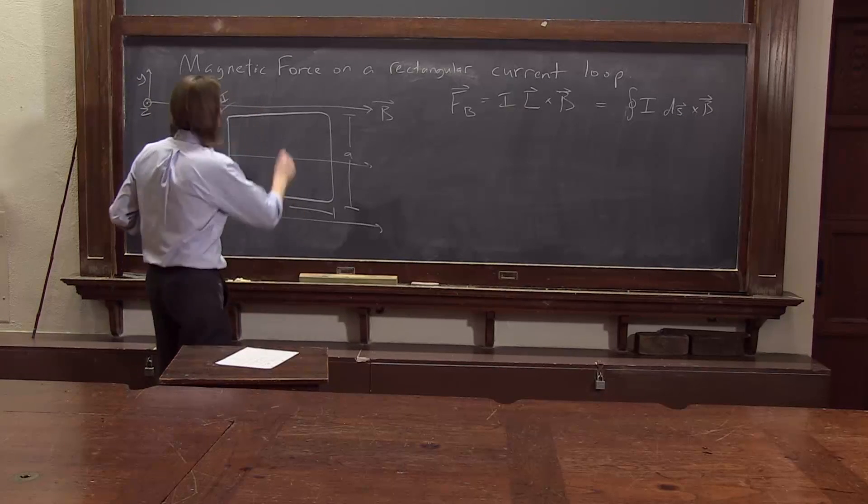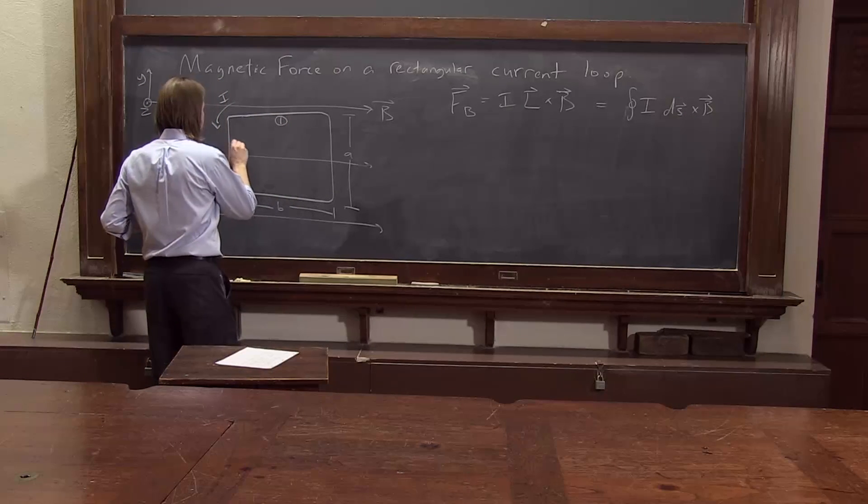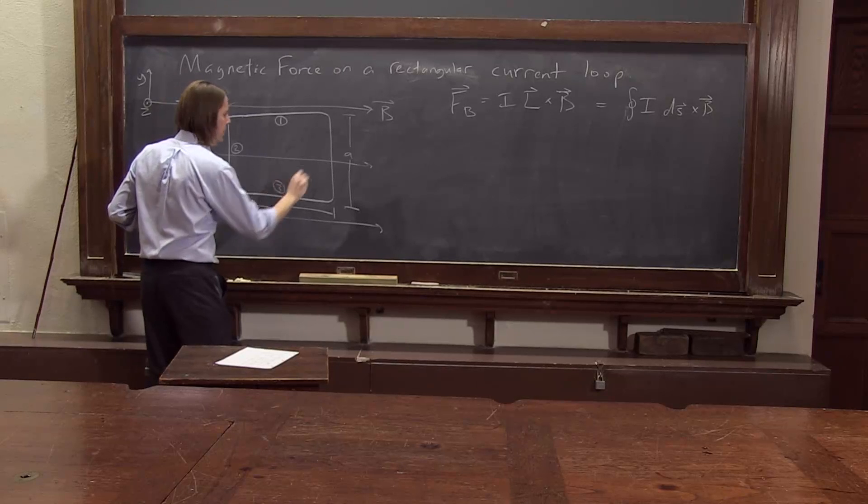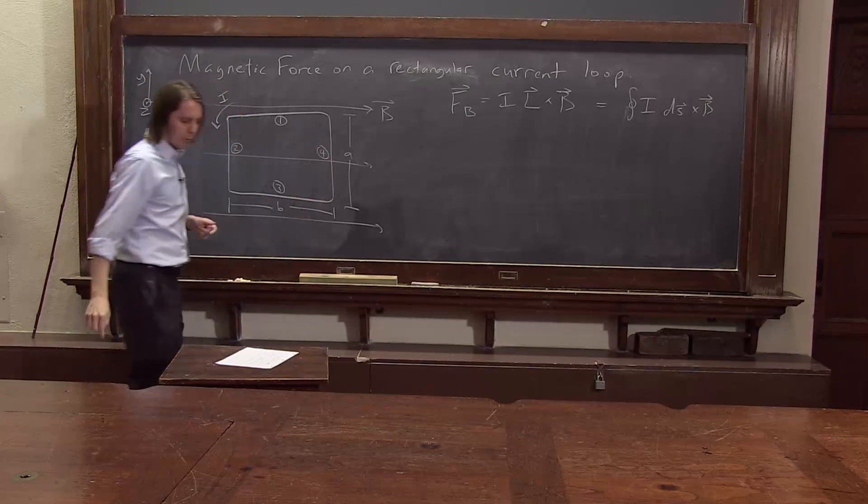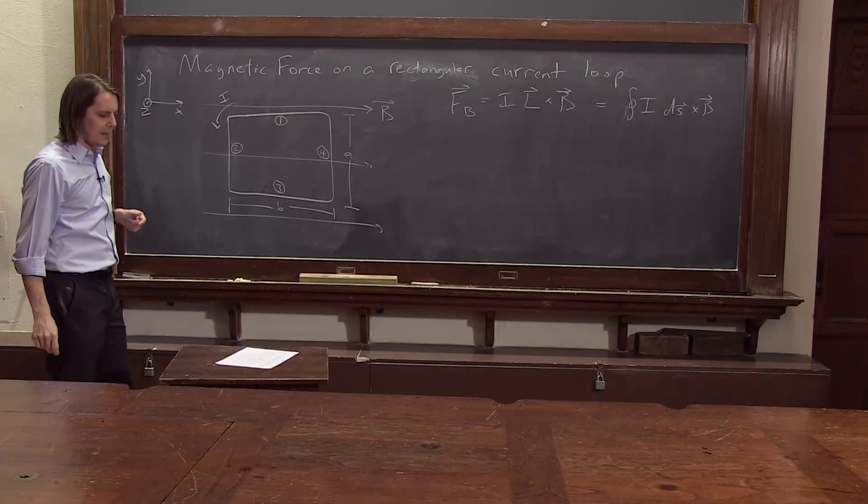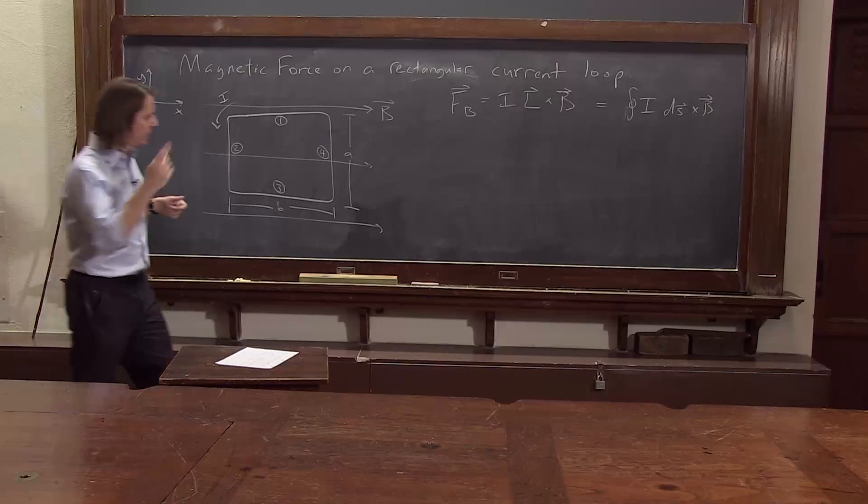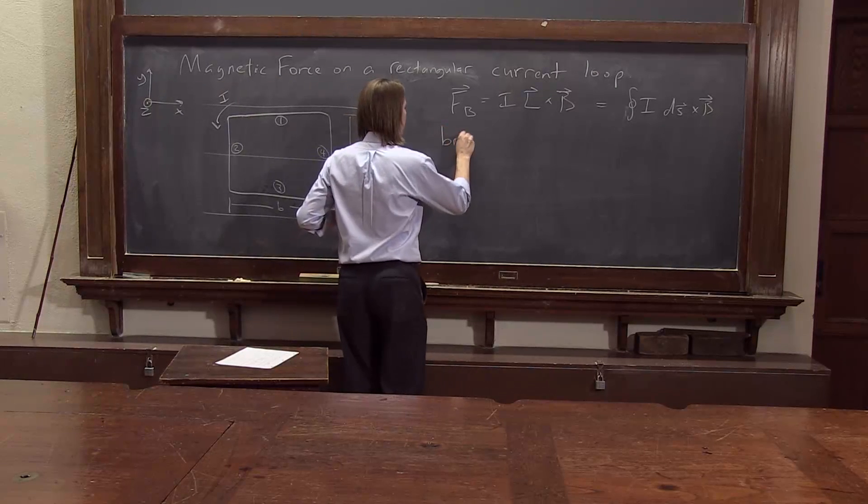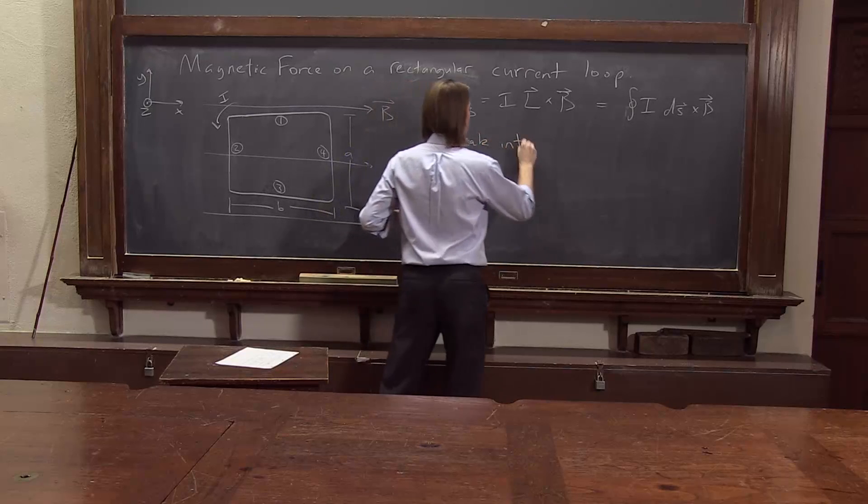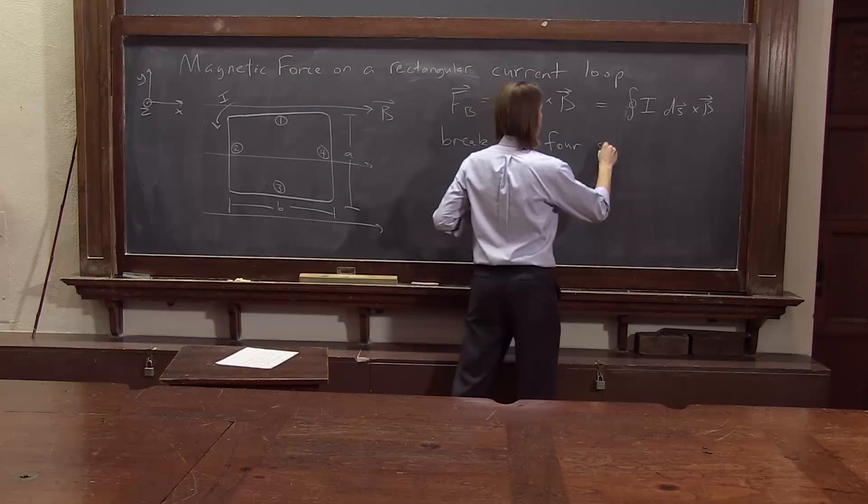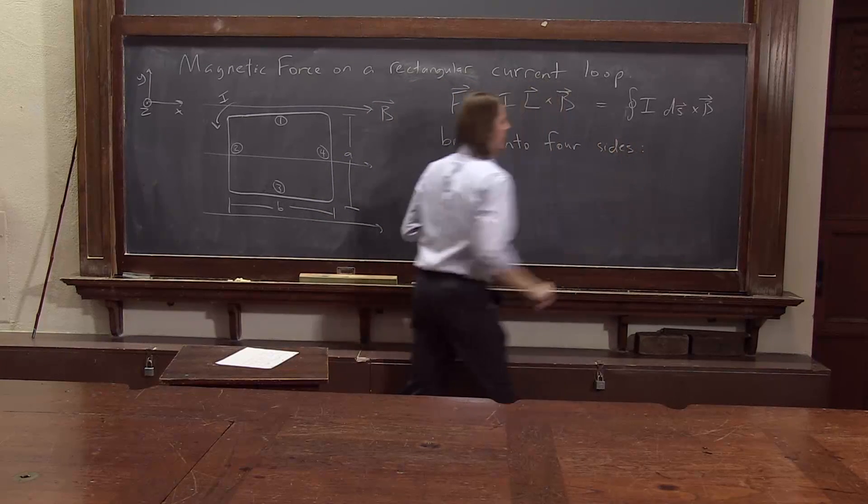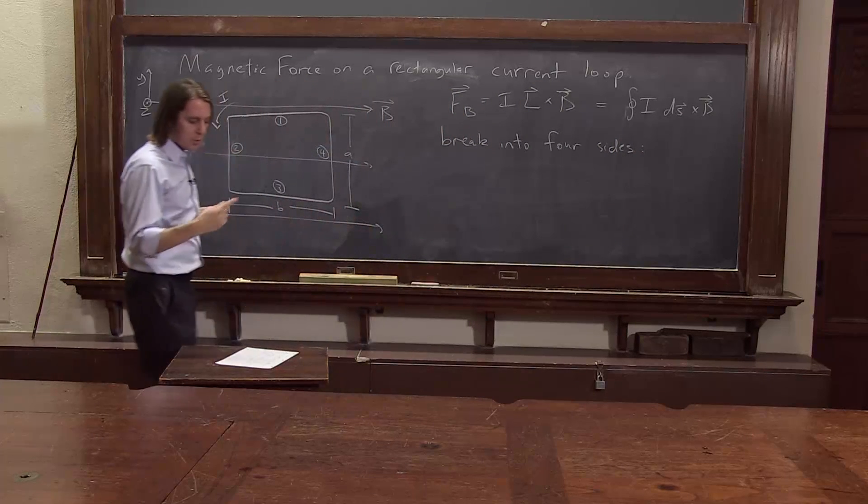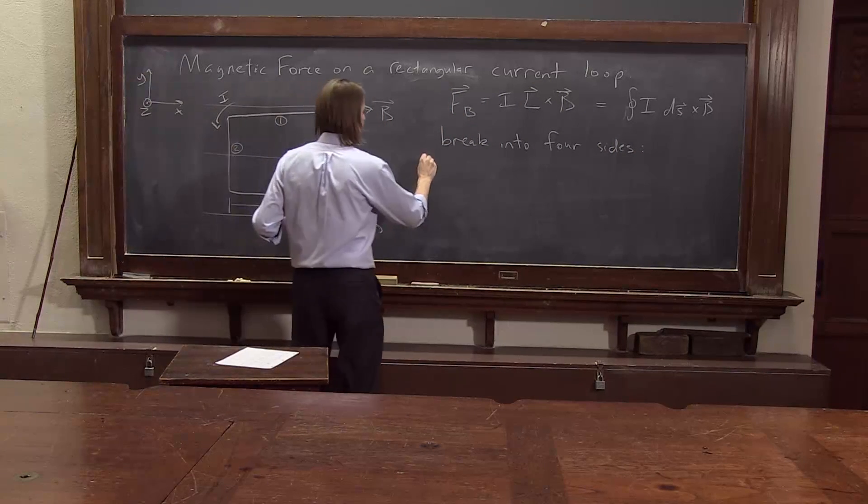So let's go ahead and number them. One, two, three, and four. Four straight sides. And now let's calculate. Let's break into four sides. And let's calculate the force on each one. And then we just have to add it up to get the total force.